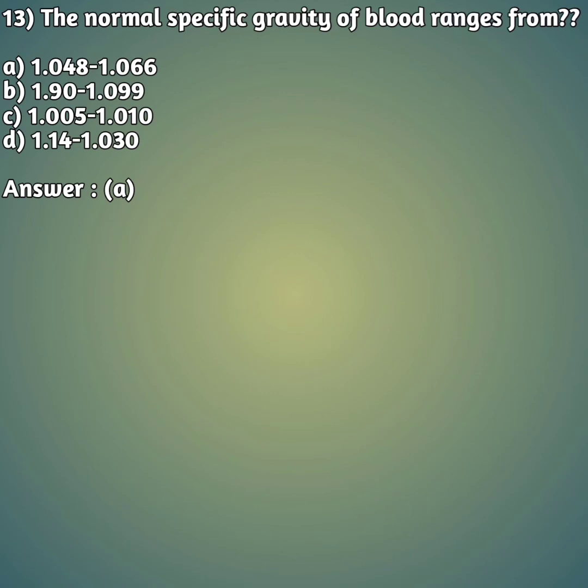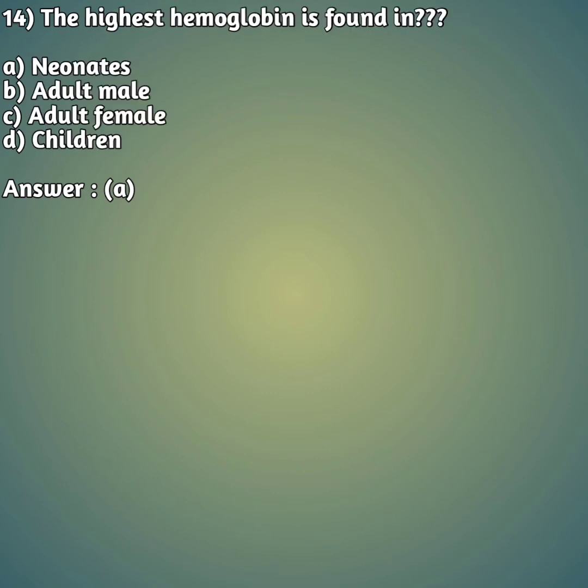Fourteenth question: the highest hemoglobin is found in — option A: neonates, option B: adult male, option C: adult female, option D: children. The right answer is option A — neonates. Newborns have the highest range of hemoglobin, around 16 to 18 g/dL.